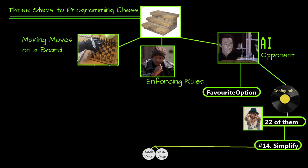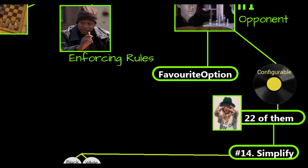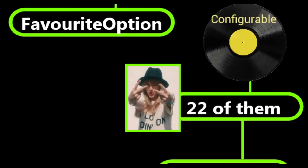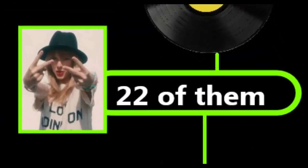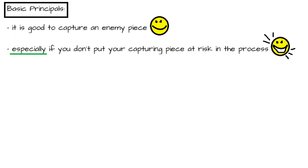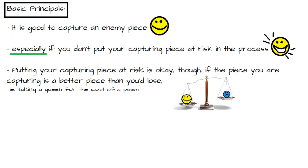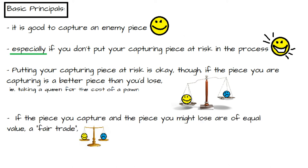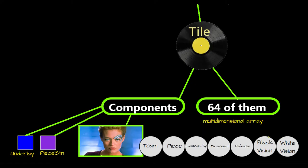So what characteristics does the bot use to distinguish a good move from a bad one? There are over 20 of them. But as an example, consider these most basic principles. It is good to capture an enemy piece, especially if you don't put your capturing piece at risk in the process. Putting your capturing piece at risk is okay, though, if the piece you are capturing is better than the piece you lose, i.e. taking a queen for the cost of a pawn. If the piece you capture and the piece you might lose are of equal value, a fair trade, then whether that is a good move for you depends on other factors, including which player currently has more material to work with. How did I program all of that?